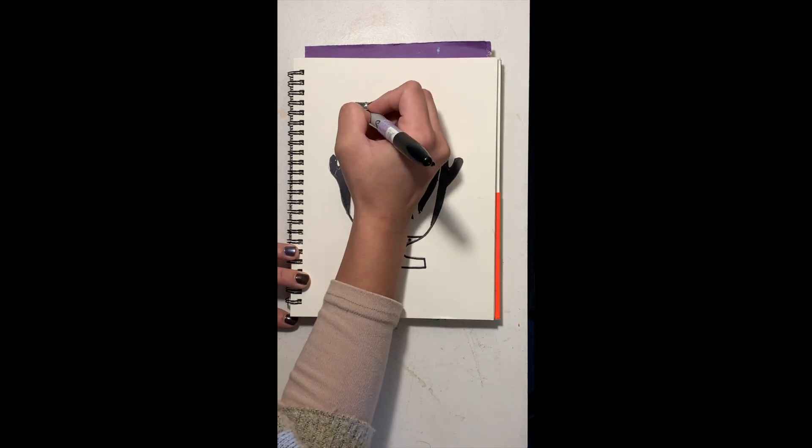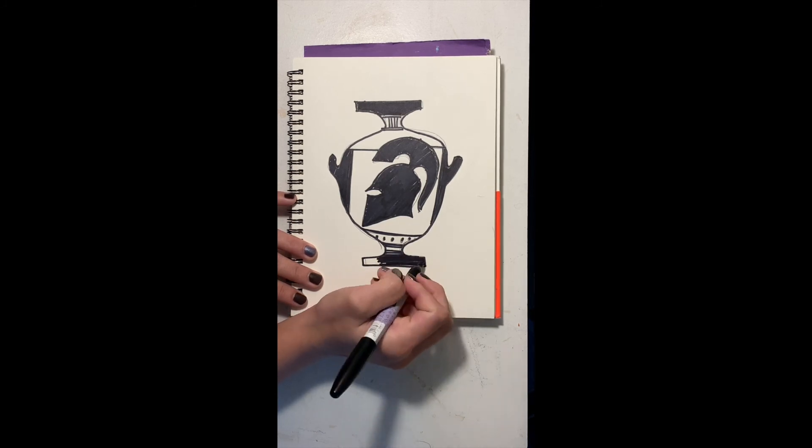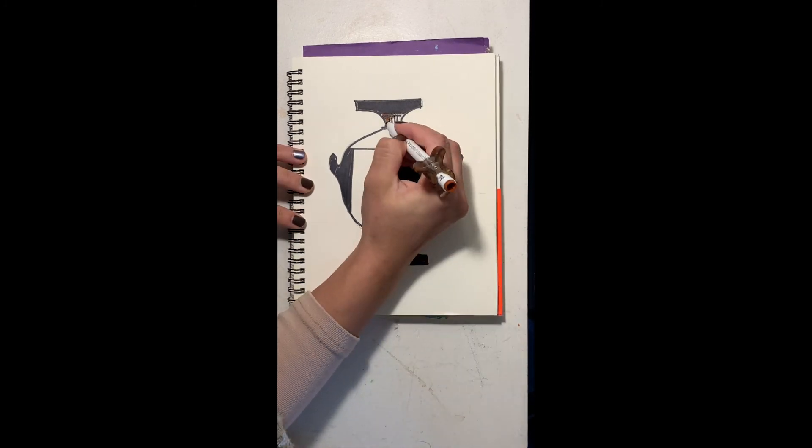And I'm leaving a little window behind the Spartan helmet blank so I can color that in later because you wouldn't want everything to be colored in black otherwise you wouldn't be able to see the picture.